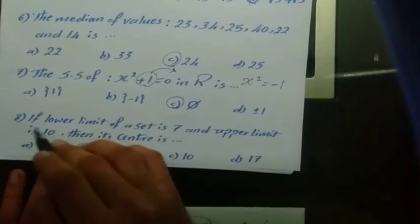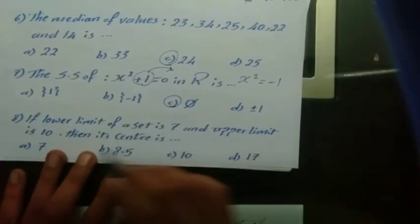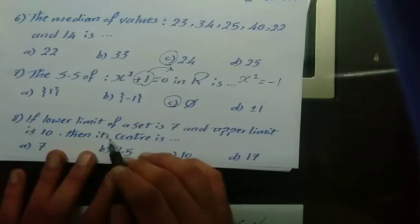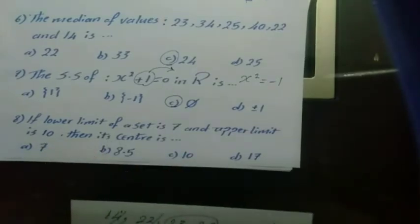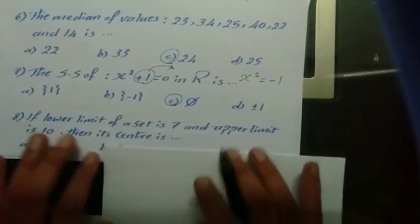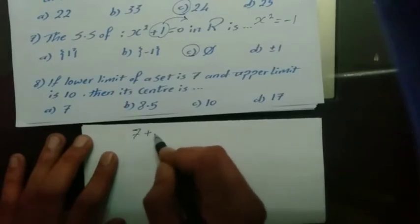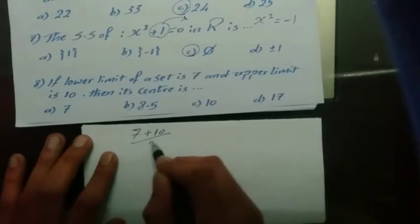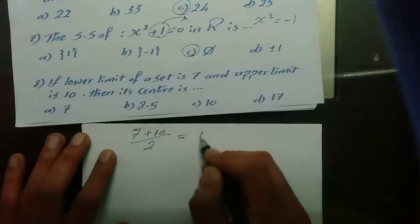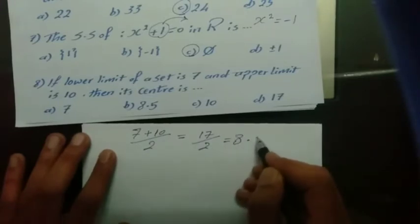Question 8: The lower limit of a set is 7 and the upper limit is 10, then find its center. The rule of the center of a set is: lower limit plus upper limit over 2, which equals 17 over 2, equals 8.5.